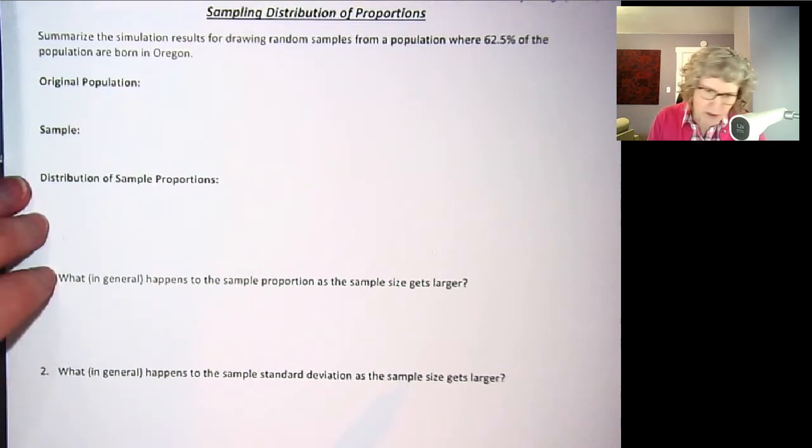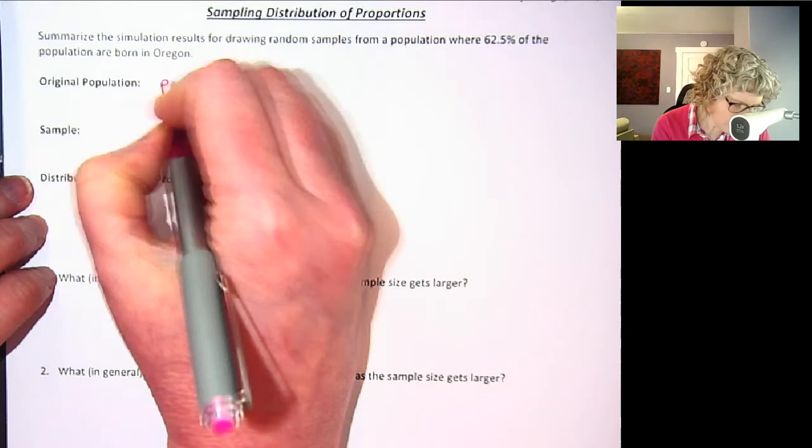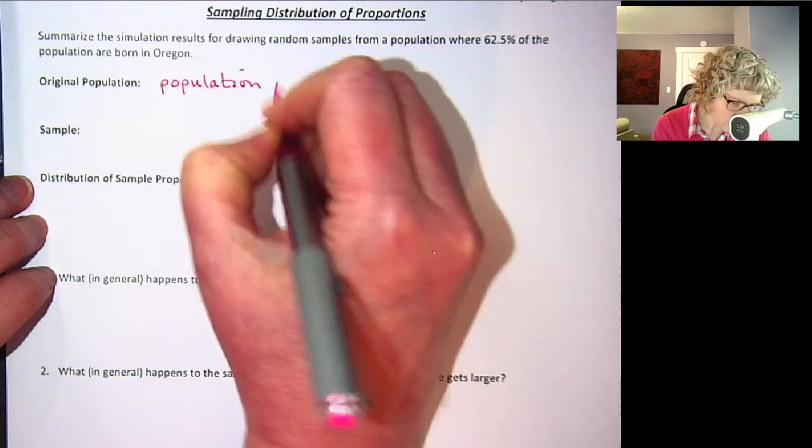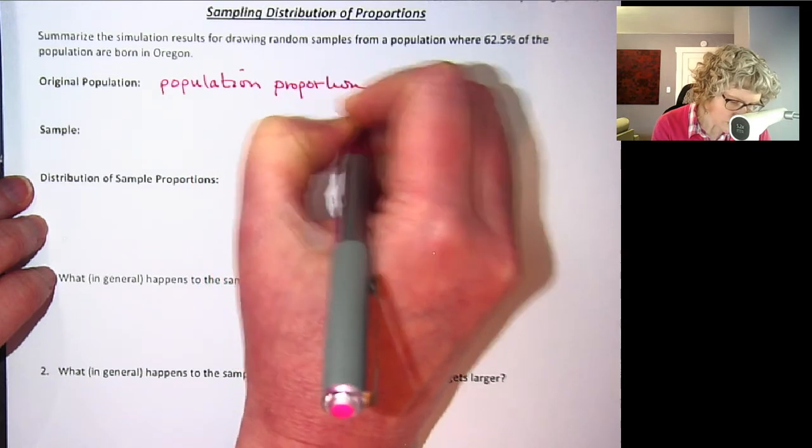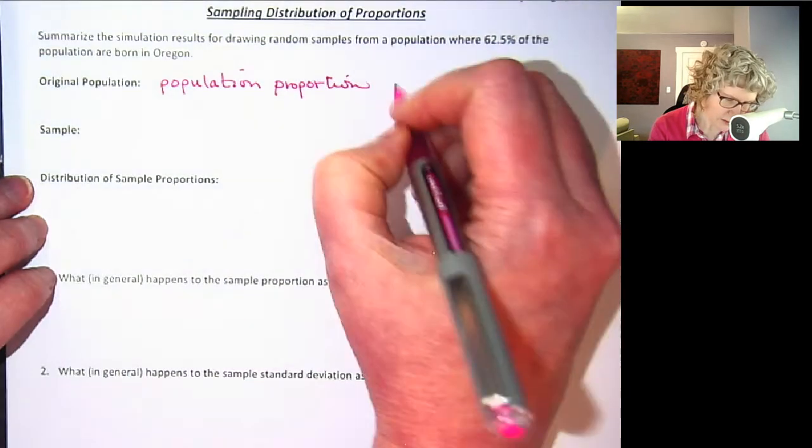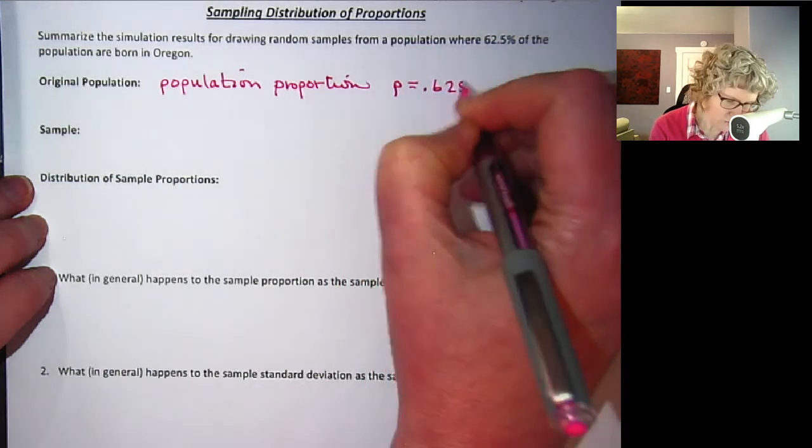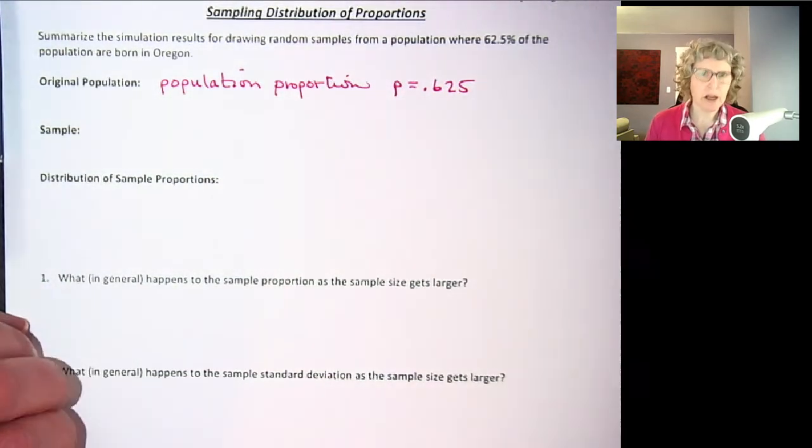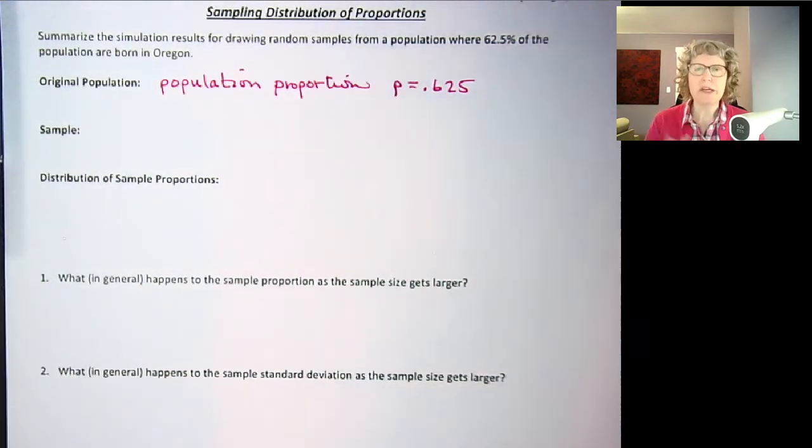So our original population we had our population proportion, you can think about it as the true proportion letter P equals 0.625, and then we did a bunch of different sample sizes, and for each size we repeated this random samples over and over again until we got a full distribution of random samples so that we can understand what the distribution of random samples looks like.